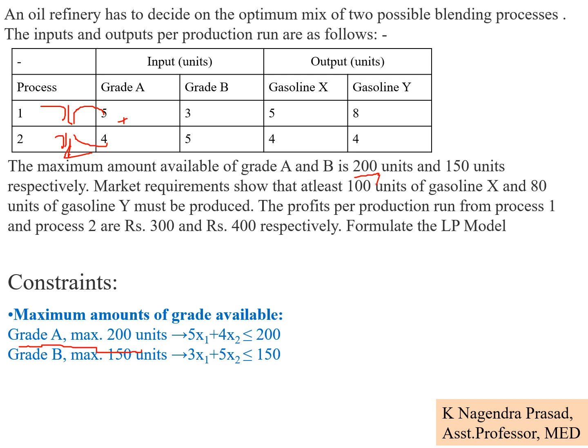Similarly, for grade B, the maximum available is 150 units. A maximum of 150 means usage can be at or below 150. Process 1 uses 3 units and process 2 uses 5 units of grade B per run. So the constraint for grade B is: 3x1 + 5x2 ≤ 150.